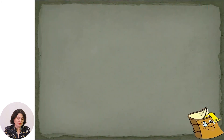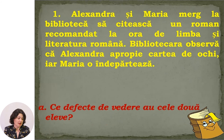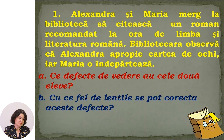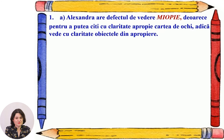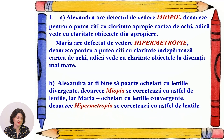Here is a problem situation to test your understanding. Alexandra and Maria go to the library to read a novel recommended in Romanian language class. The librarian notices that Alexandra brings the book close to her eyes, while Maria moves it farther away. What vision defect do the two students have, and with what type of lenses can these defects be corrected? Alexandra has myopia because she brings the book close to see clearly — she sees nearby objects clearly. Maria has hypermetropia because she moves the book away to read clearly — she sees distant objects clearly. Alexandra should wear glasses with diverging lenses, and Maria glasses with converging lenses.